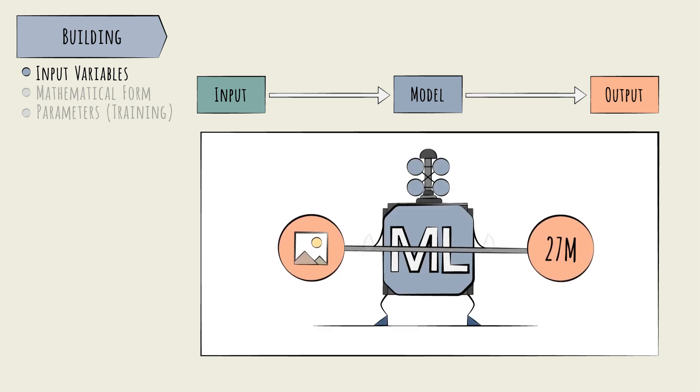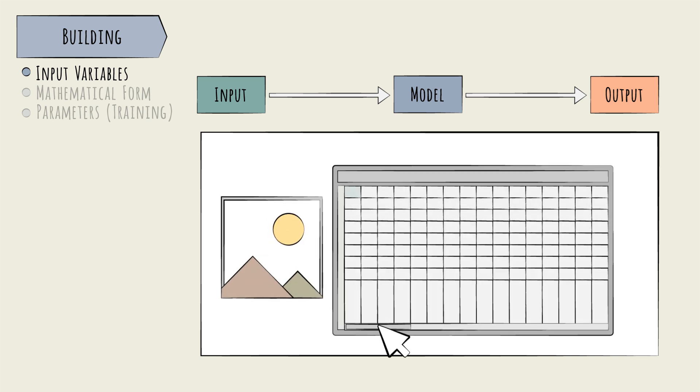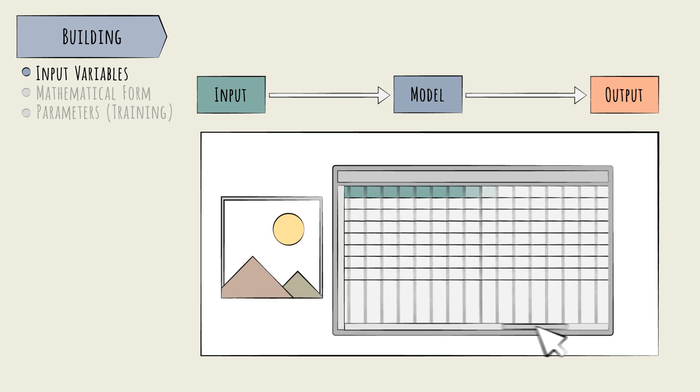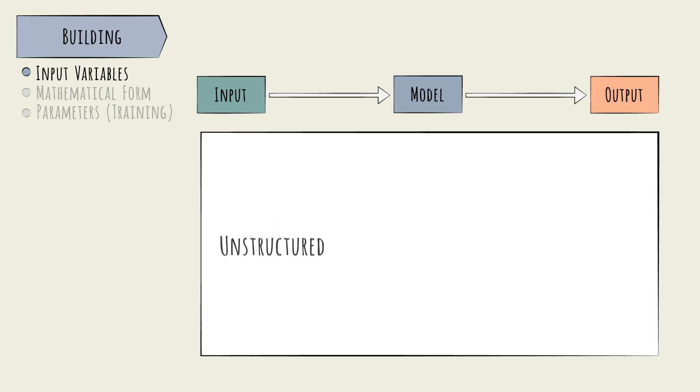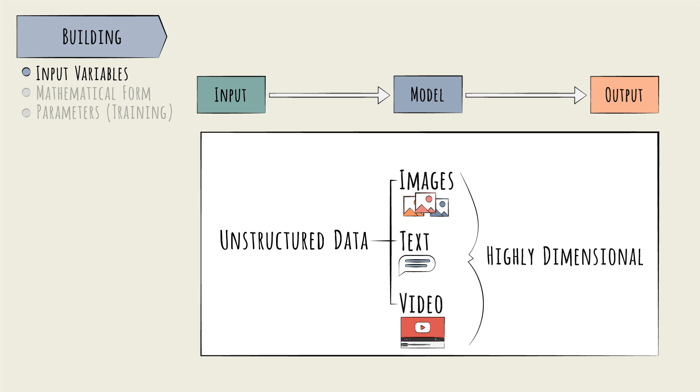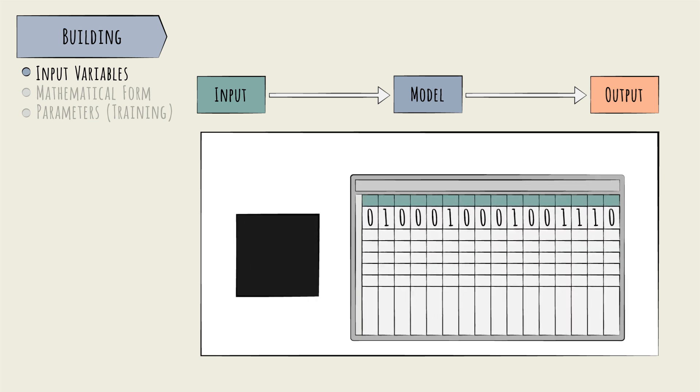And more variables mean much more computational complexity. When each data point is represented by a large number of attributes, the data is described as high-dimensional. Real-world pictures and other unstructured data, like text, are indeed high-dimensional. In our simple example, however, we can represent each image with 16 dimensions or input variables.